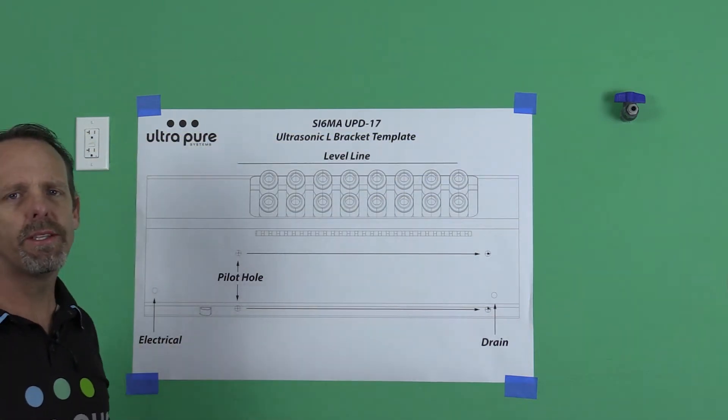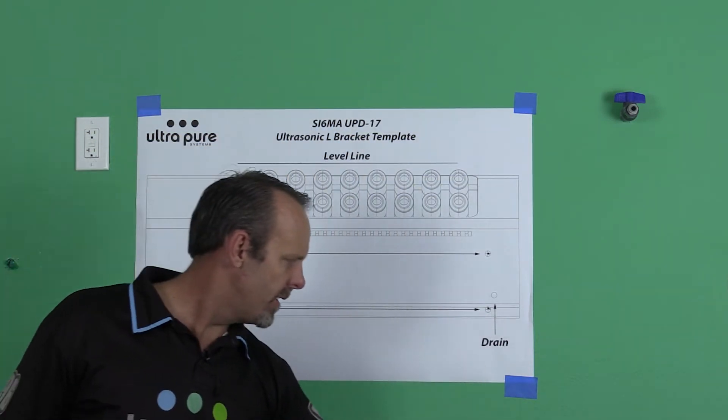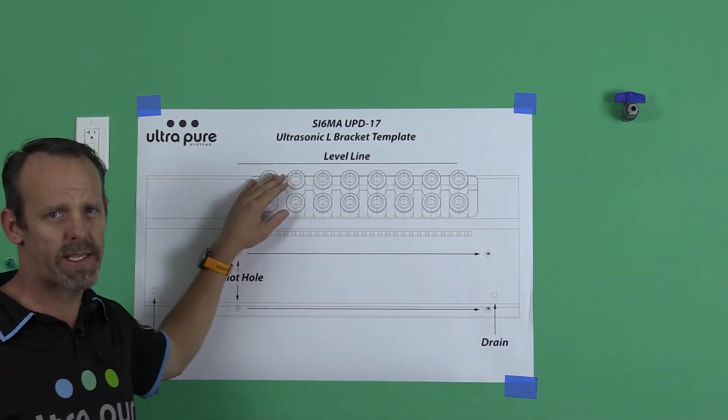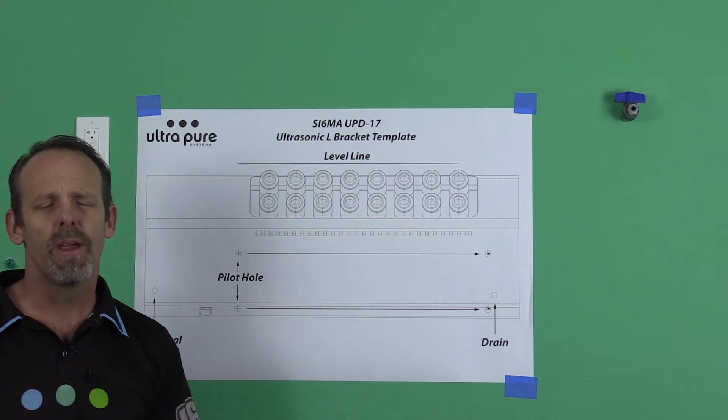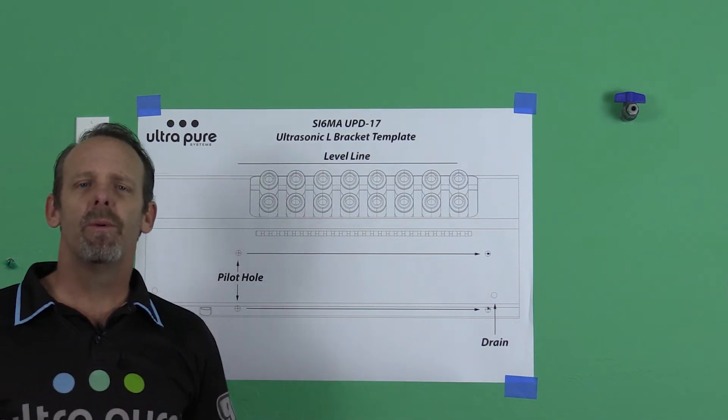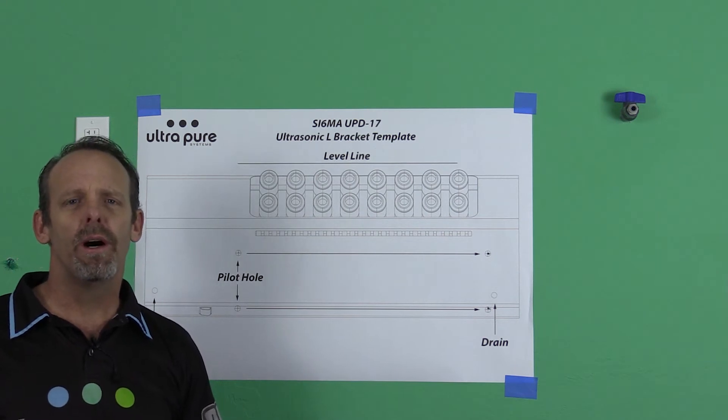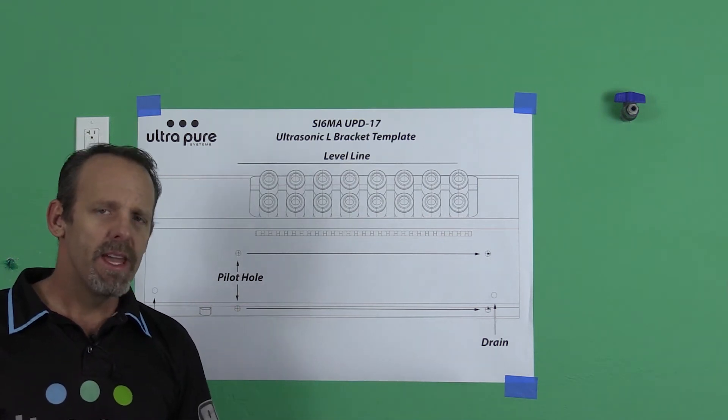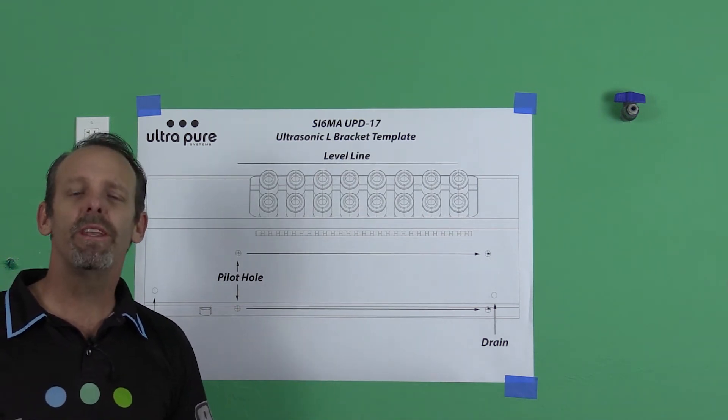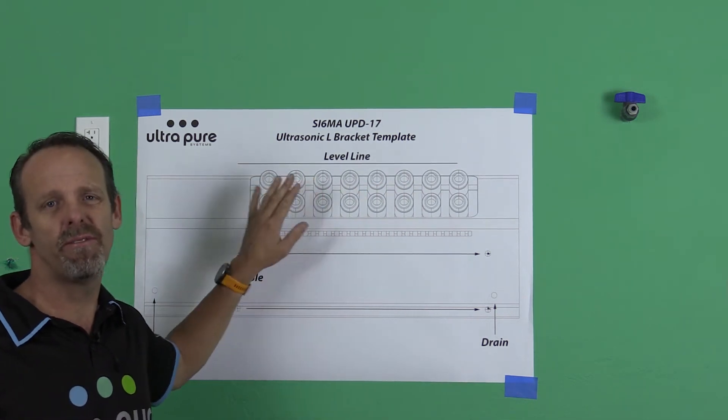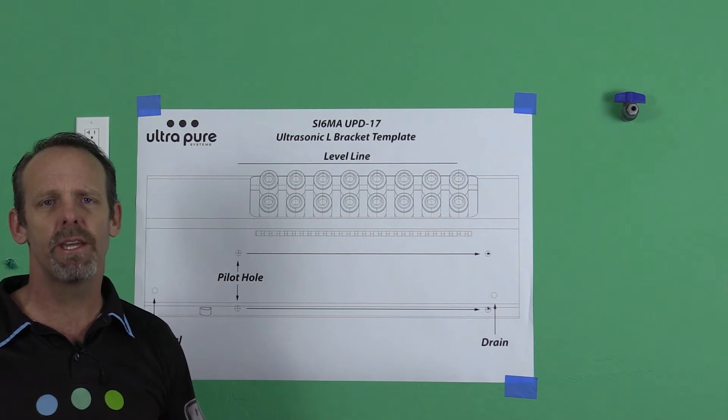You're going to want to make sure where it says level line that we are in fact level. And what that's going to do is confirm to you that the humidifier, once it sets onto the L brackets, is going to be level. If not, what's going to happen is the very small water bed that is below in the humidifier, if it's not level, it's going to affect the operation of the mist that comes out of all these nozzles. So it's a very important part of installation to make sure.